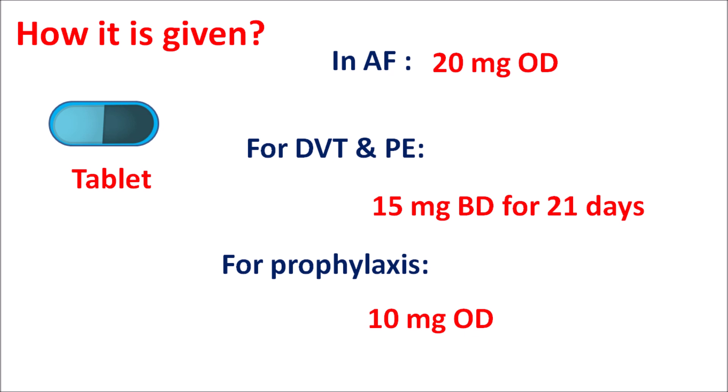Rivaroxaban is one of the anticoagulants — it is a factor 10a inhibitor. This drug can reduce the risk of deep vein thrombosis and pulmonary embolism, and it can also reduce the risk of stroke and systemic embolism. That's why this drug can be given in patients with non-valvular atrial fibrillation to reduce the risk of stroke. Hemorrhage is the main side effect, but when this drug is suddenly discontinued it can increase the risk of thrombotic events. So there is a sensitive balance between the beneficial effects and adverse effects, and based on that this drug should be prescribed, with hemorrhagic events closely monitored.